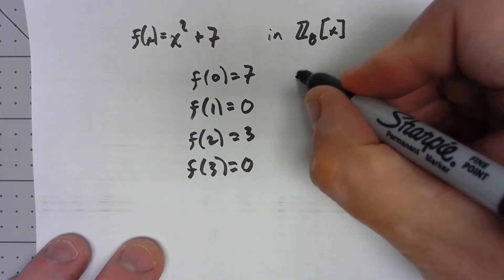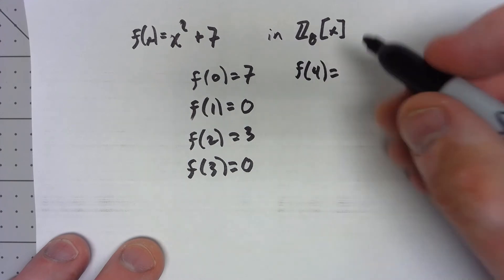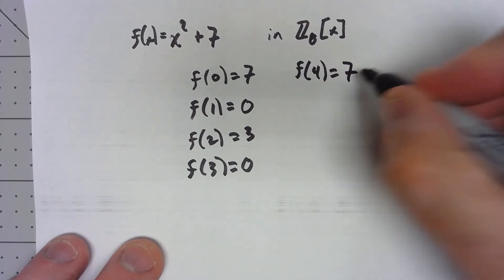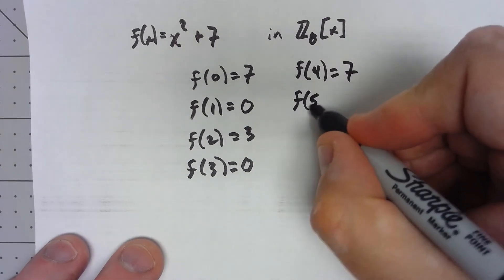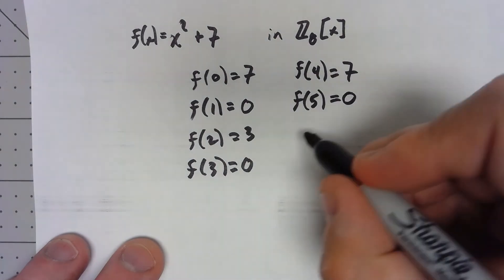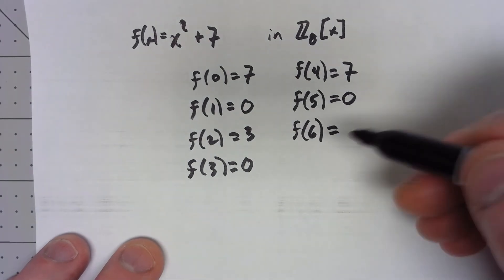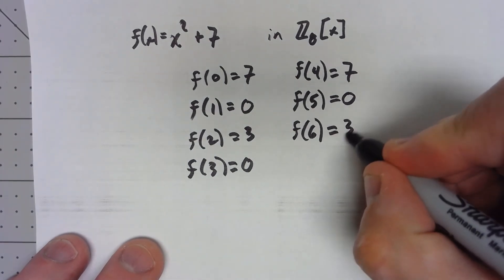f(4) is 7, f(5), 25 plus 7 gives us 0, f(6), 36 plus 7, 43 is 3, and f(7) is 0.